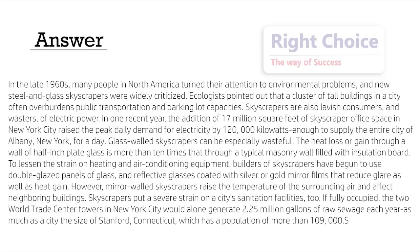In one recent year, the addition of 17 million square feet of skyscraper office space in New York City raised the peak daily demand for electricity by 120,000 kilowatts — enough to supply the entire city of Albany, New York, for a day. Glass-walled skyscrapers can be especially wasteful. The heat loss or gain through a wall of half-inch plate glass is more than 10 times that through a typical masonry wall filled with insulation board. To lessen the strain on heating and air conditioning equipment, builders have begun to use double-glazed panels and reflective glass coated with silver or gold mirror films that reduce glare as well as heat gain.